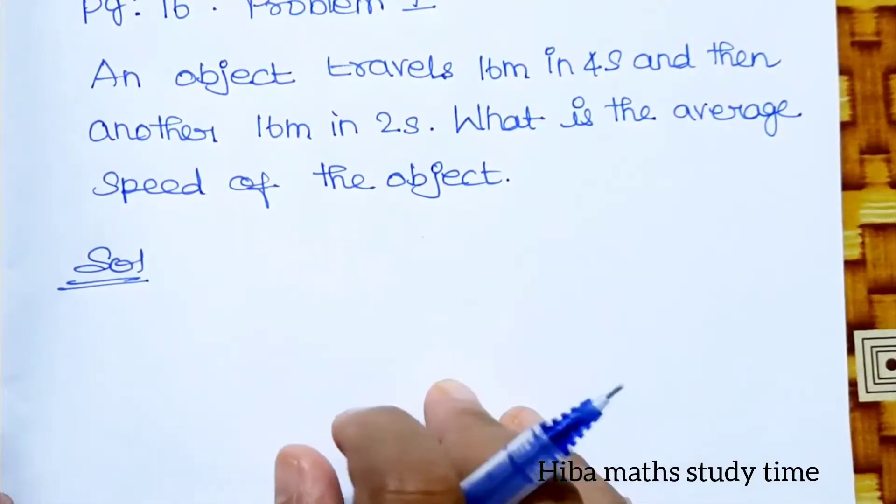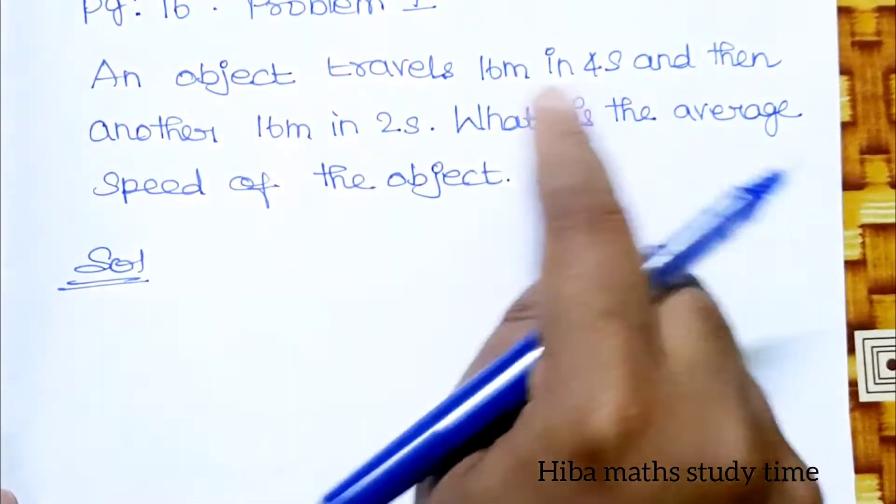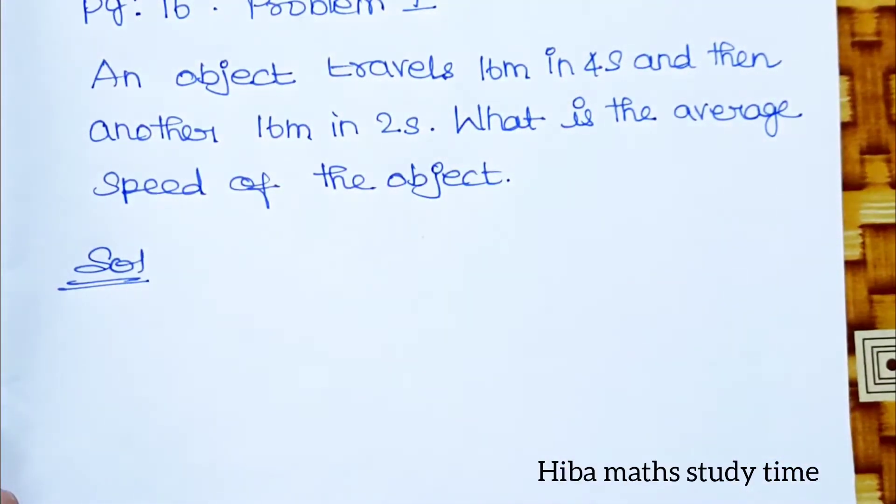Distance divided by time taken. So we have to calculate total distance divided by total time.